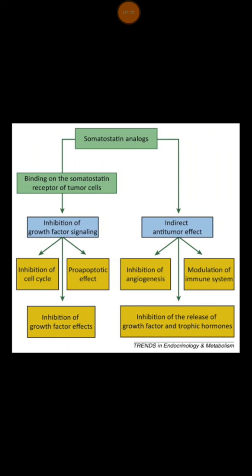Somatostatin analogue can also bind to the receptor and inhibit the release of hormones, and that's why it can be used in functional neuroendocrine tumors to improve symptoms — for example, in cases of carcinoid.